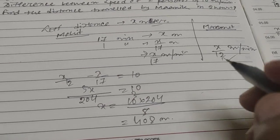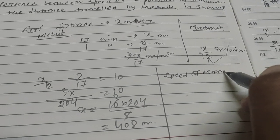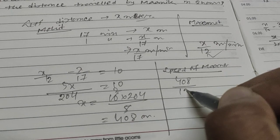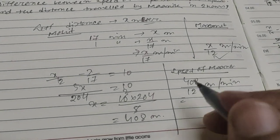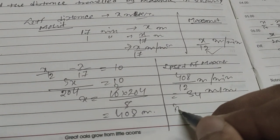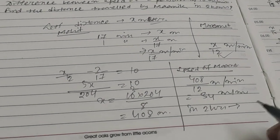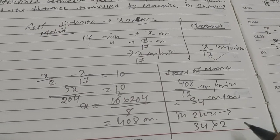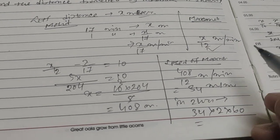So in two hours what distance will he cover? 34 into 2, and this is in minutes, so to convert it to hours, into 60. This will be 34 into 120, which equals 4080 meters. This will be the answer.